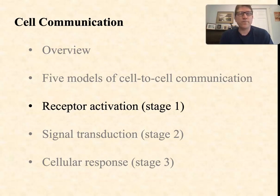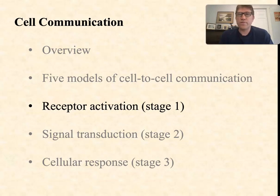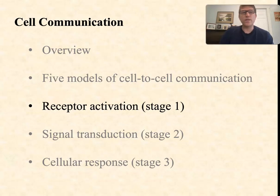Hey guys, Dave Cummings here from Point Loma Nazarene University. This is the third video in a series on cell communication. What we're going to do here is look at the three steps, the stages, of cell-to-cell communication, where the receptor first receives the signal and becomes activated, the signal is transduced across the membrane and sometimes across the cytoplasm to some location within the cell where a cellular response is initiated. So let's go ahead and jump right in.